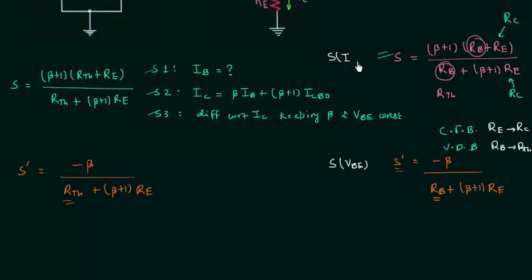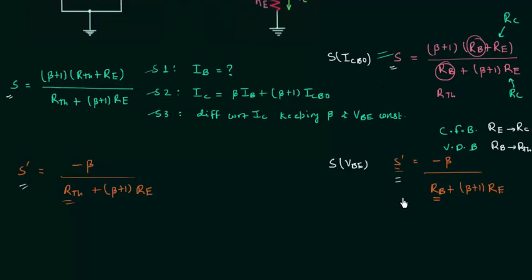This is all for this lecture. I hope you now understand how to obtain the stability factors in case of voltage divider biasing by using the stability factors obtained in case of emitter bias configuration. If you have any doubt you may ask in the comment section. I will end this lecture here, see you in the next one.